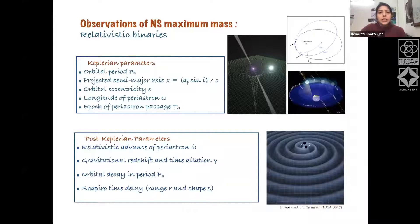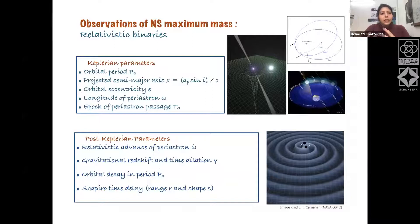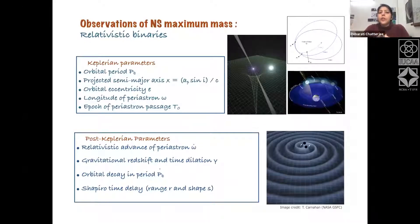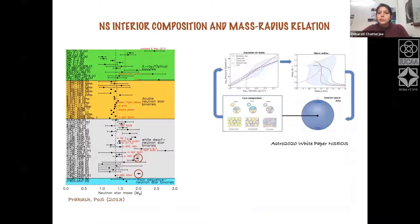In relativistic binary neutron star systems, we can measure not only Keplerian parameters but also post-Keplerian parameters that arise from strong relativistic effects, since neutron stars have very strong surface gravity. From these measurements, we can determine neutron star masses precisely. A chart compiled by Prakash shows that most neutron star masses cluster around 1.4 solar masses.